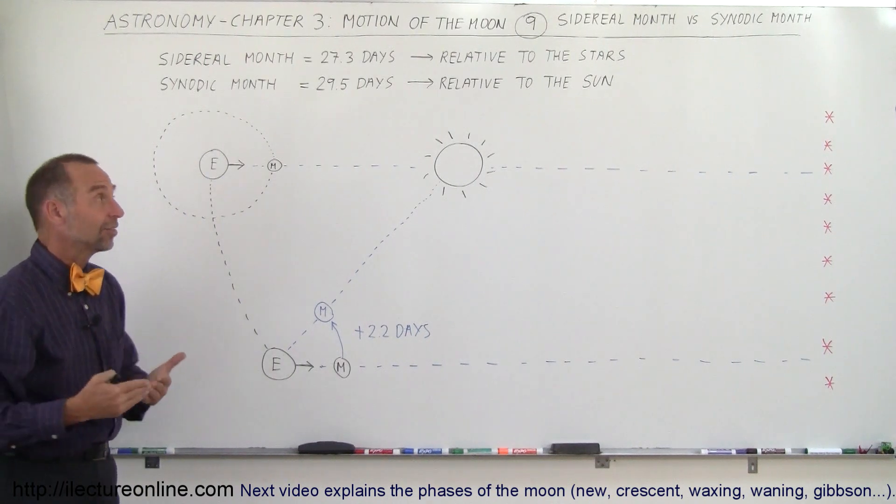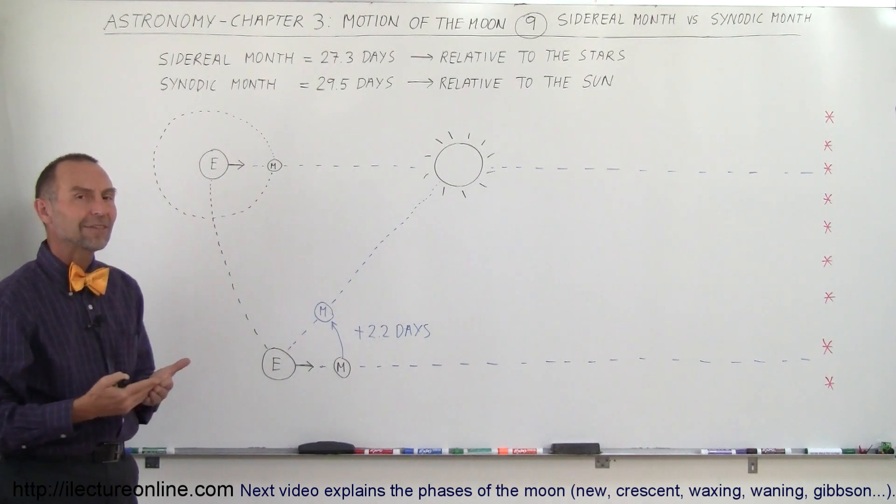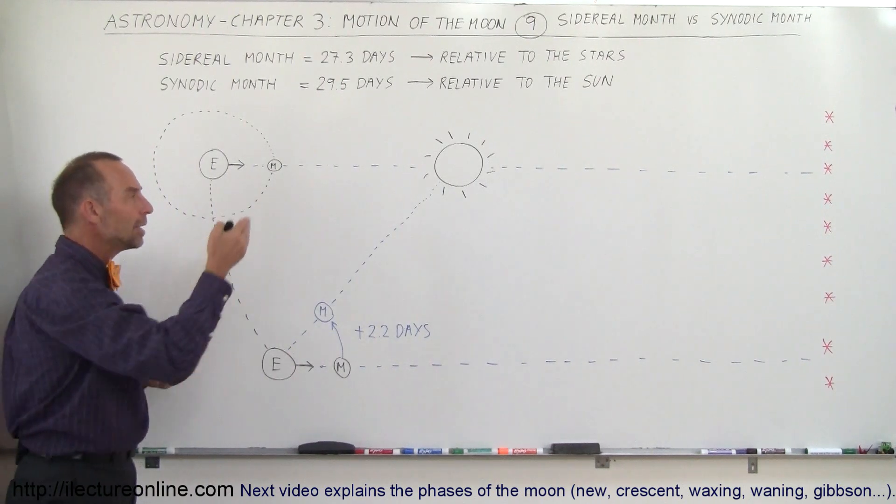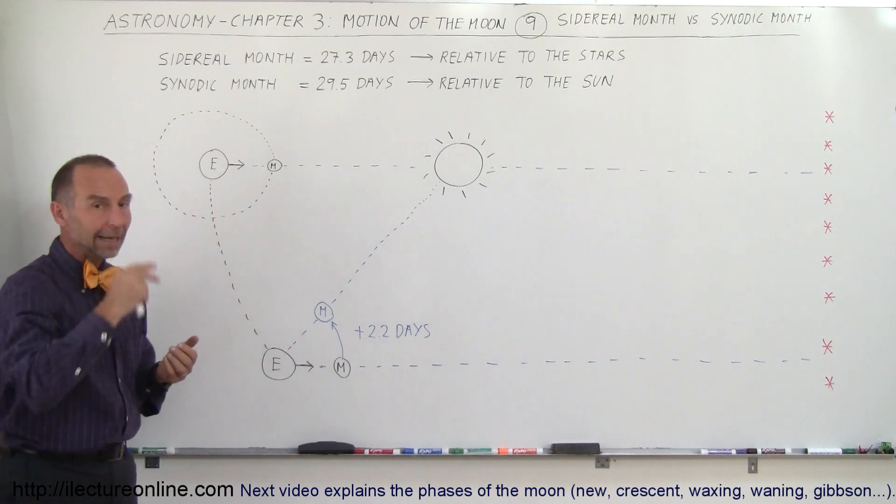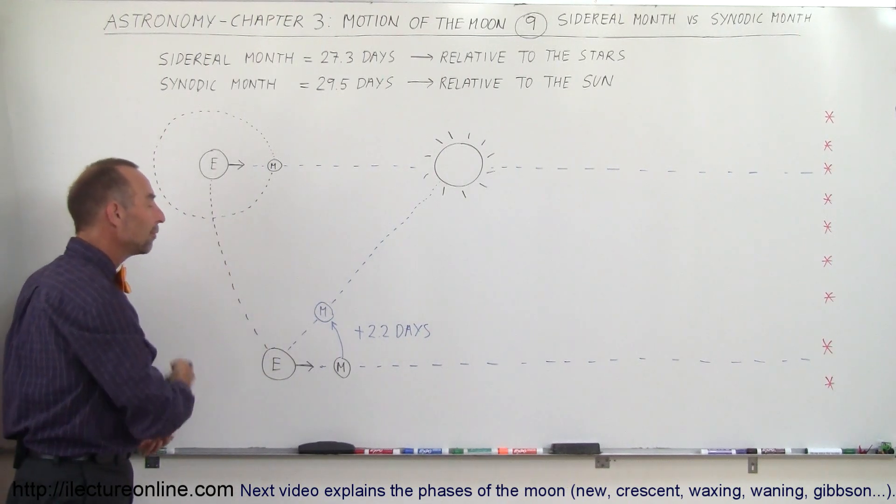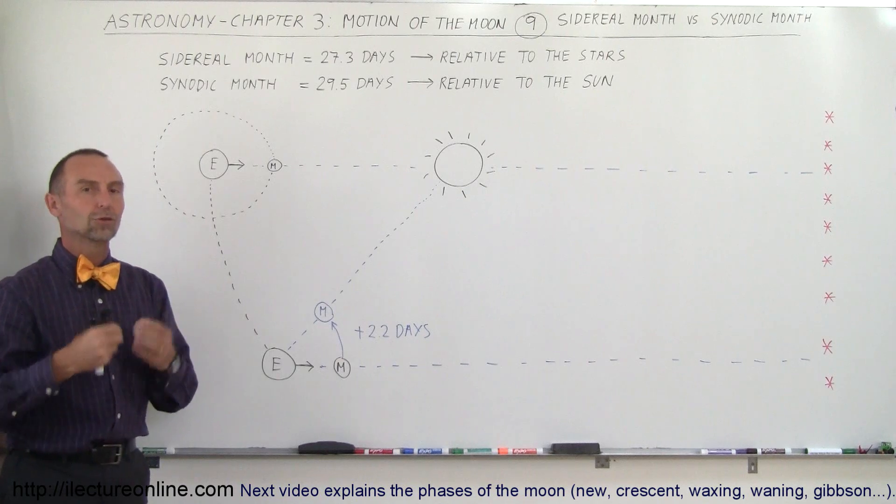So it actually travels more than 360 degrees in 29.5 days. That's called a synodic month, because it's in sync with the motion of the earth and the sun, and it represents then the time it takes for the moon to go completely through all of its phases back to the beginning, where it's a new moon again.